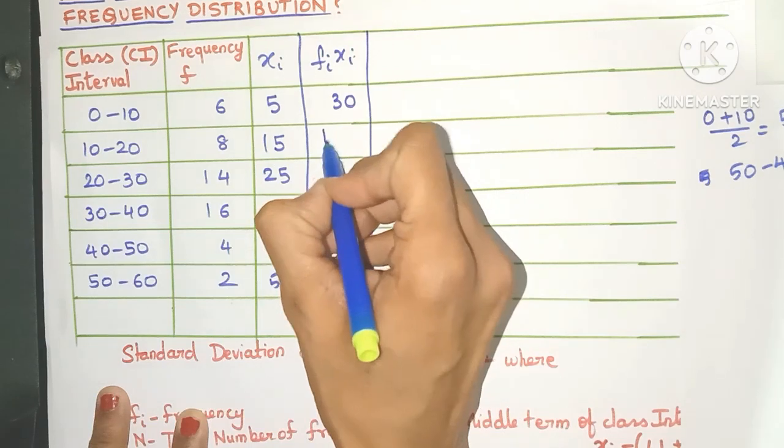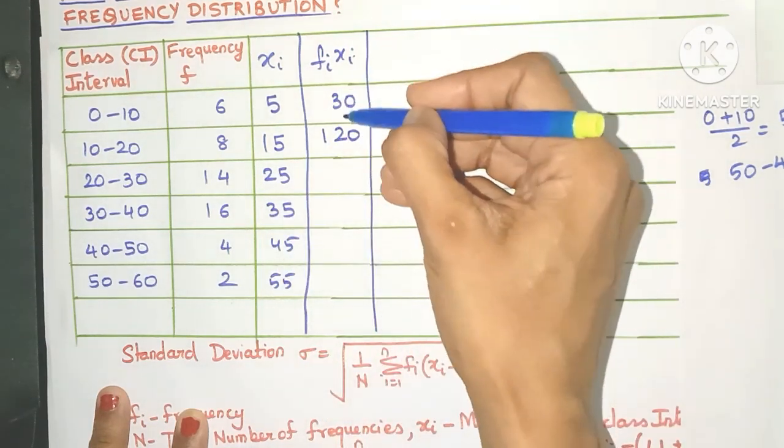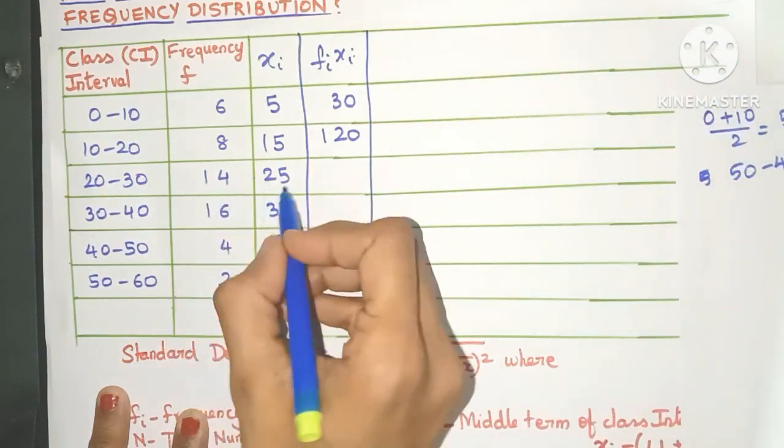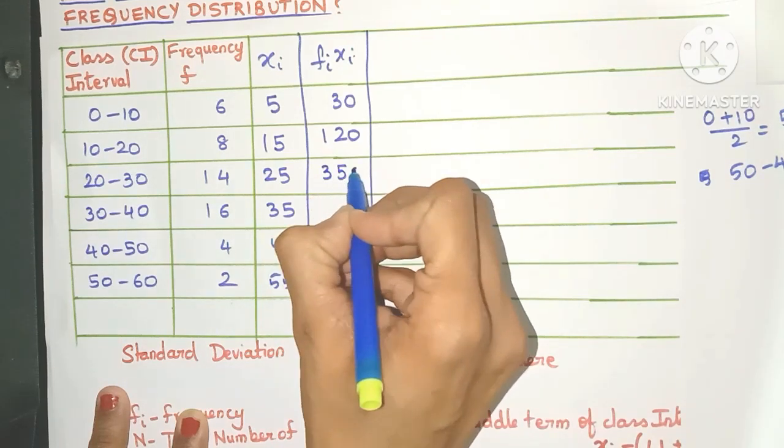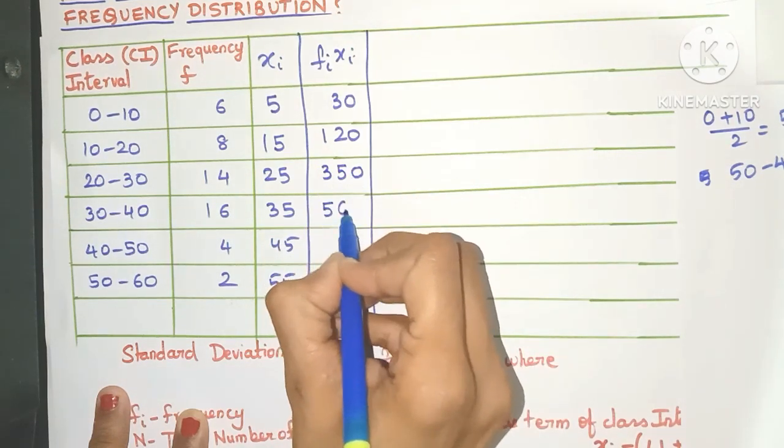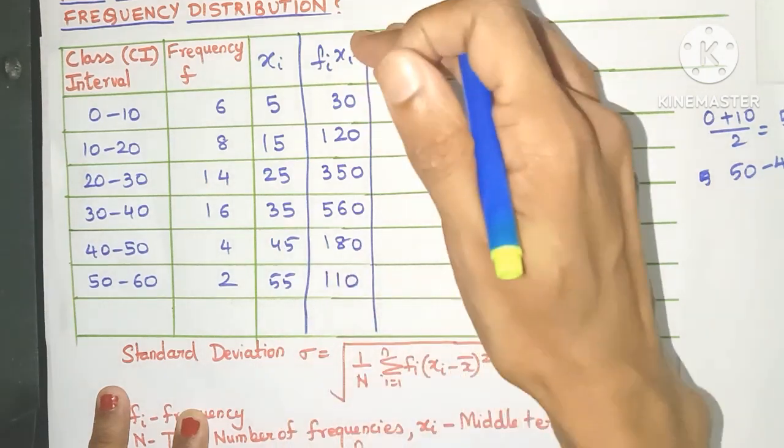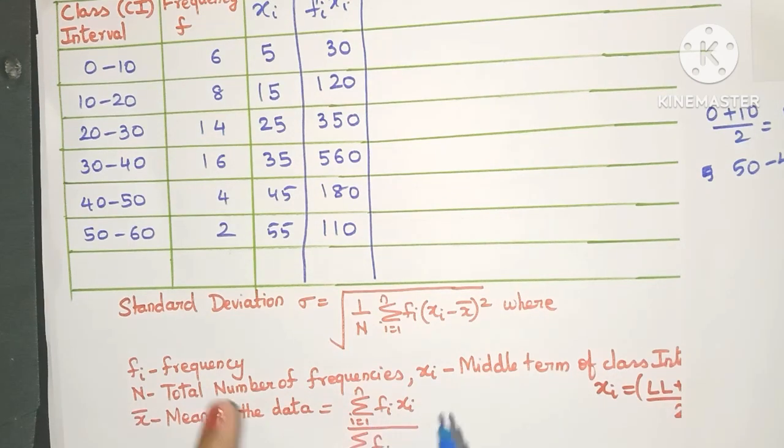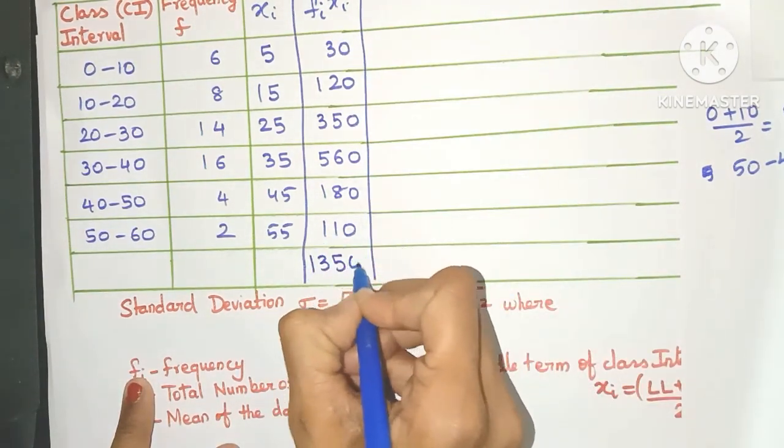6 times 5 is 30, 8 into 15 is 120. Now while you are writing the numbers, make sure to write the digits one below the other so that it will be easy when you are adding it. Now I have already done the calculations, so I will just copy the answers. You will get 350, 560, 180, and 110. So these are all the fi xi values, but we need to find their summation. So just need to add all of this. You will get the answer as 1350.